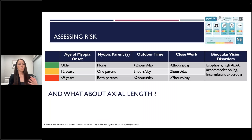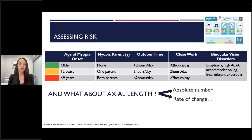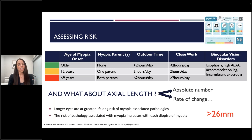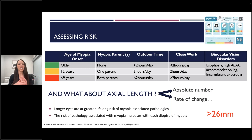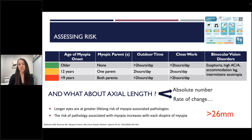Back to assessing risk — axial length is itself a risk factor. We know a longer eyeball is at higher risk. We look at the absolute number and also the rate of change. Longer eyes have a greater lifelong risk of myopia-associated pathologies, and the risk of pathology associated with myopia increases with every diopter — meaning every diopter matters. There's a paper by Mark Bullimore and Noel Brennan from 2019 that really shows there is really no time that's too late to intervene. As we hit closer to a 26 mm eye or over -4.00 D, that's where things really take off — it's not linear, the risk increases sharply.